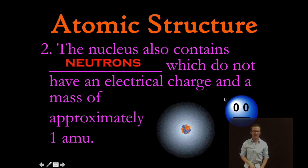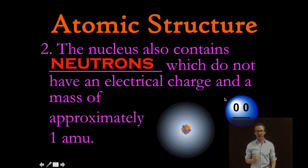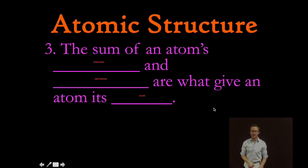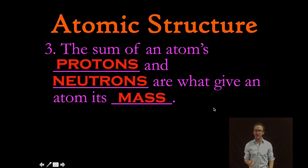Which brings us to the second member of the atoms family, good old Nelda, Nelda Neutron. The nucleus also contains neutrons which do not have an electrical charge and a mass of approximately one AMU. Now it's important to note that the sum of an atom's protons and neutrons are what give an atom its mass. Again, remember they each have an approximate mass of one AMU.